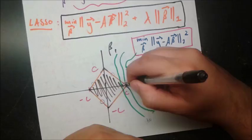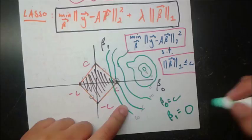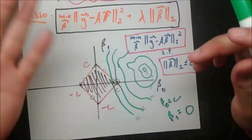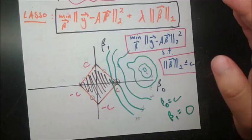For example this certain green curve decided to hit it on this, so what is this? This is beta naught is equal to c and beta one is equal to zero. So we get the zero and this is just in two dimensions it becomes a little bit more difficult to visualize in three and further dimensions but the analog remains the same, which is that it's going to tend to hit corners a lot more and on these corners something or another is zero.